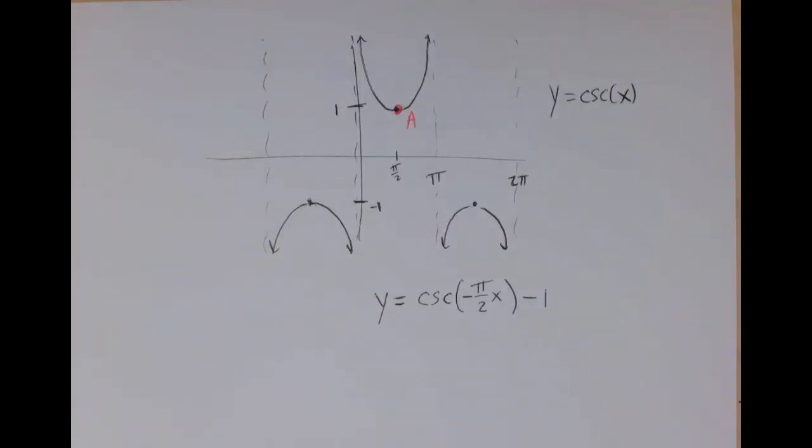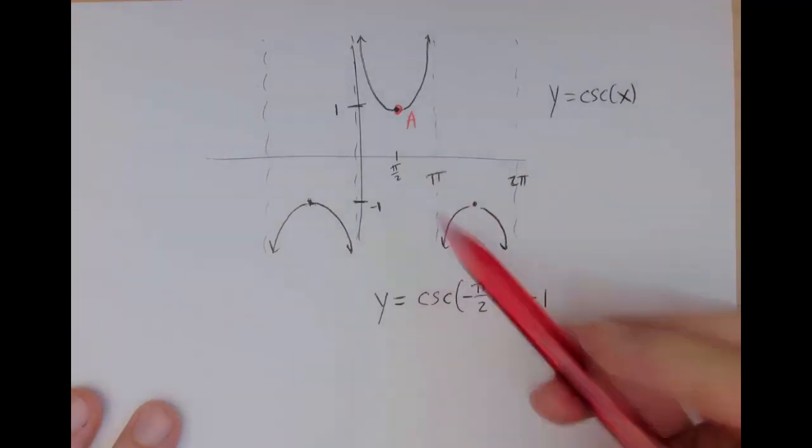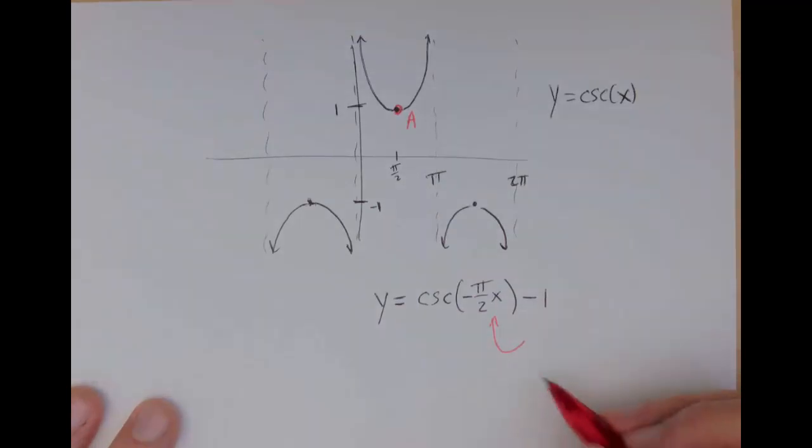Okay, so here the vertical transformation is easy. We're just shifting down by 1. So this point A that used to be at 1, the y-coordinate is now going to shift down to be 0. For the horizontal transformations, I see a negative sign. So that means I'm reflecting it horizontally. So π/2 is going to reflect over here to negative π/2. But I'm also scaling it. So here's a nice way of thinking about it. I know that point A happens at π/2. So what x-coordinate could I plug in where it's going to give me π/2 as an output when I do the multiplication? And pretty clearly, if x equals negative 1, that's the input that will give me π/2 when I do the multiplication.